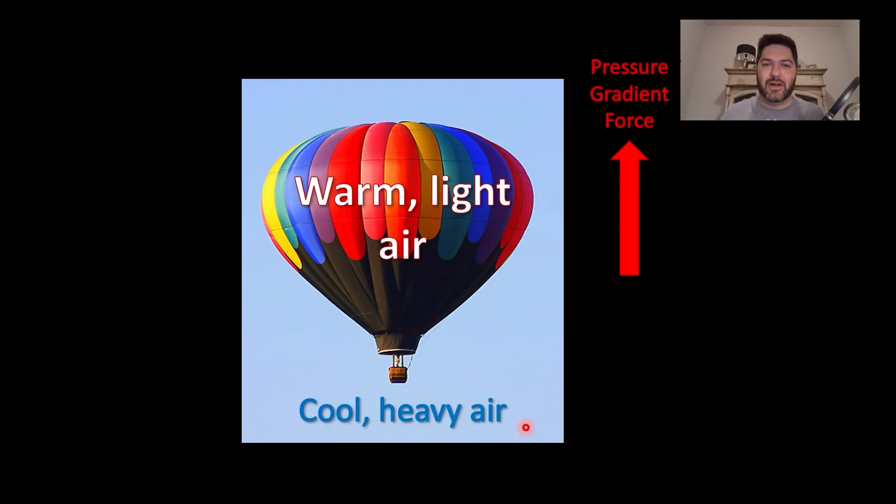What this means is that you have a pressure gradient force essentially pointing upward, high to low. This cool, heavy air is pushing this warm, light air upwards. Gravity is operating in the opposite direction. However, in general, you do have a net upward force, and this is known as buoyancy. If you've ever heard the term convective available potential energy, this is what that represents.